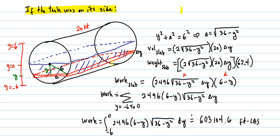And we draw our water slab, but the water slab is not a little cylinder this time. It's a rectangular type of slab delta y thick. We have to set up this relationship of y to the radius 6, figure out what this length a is here. So you have the Pythagorean theorem.